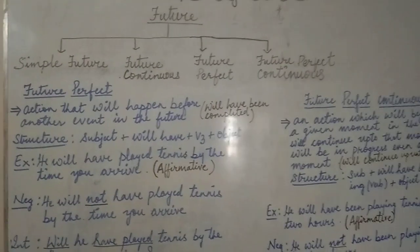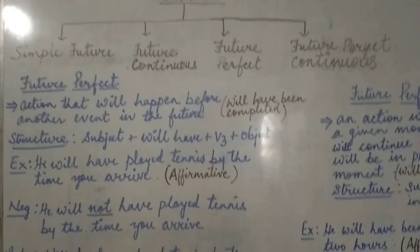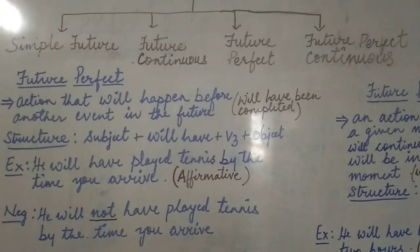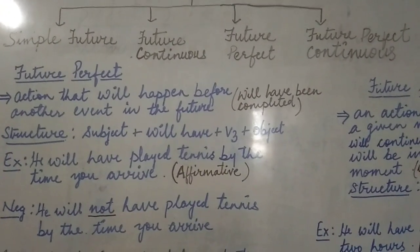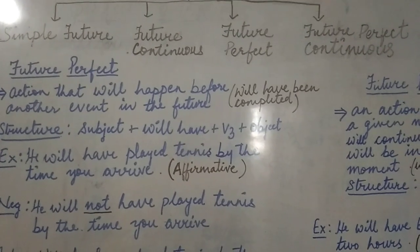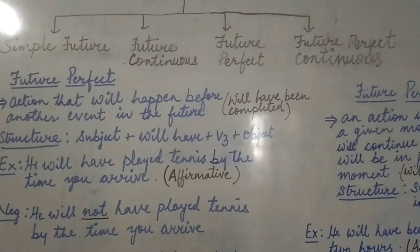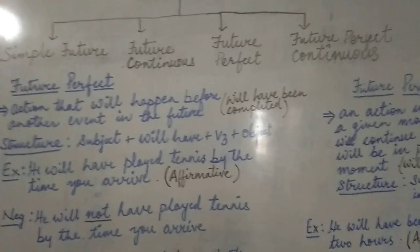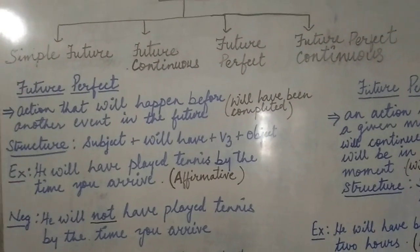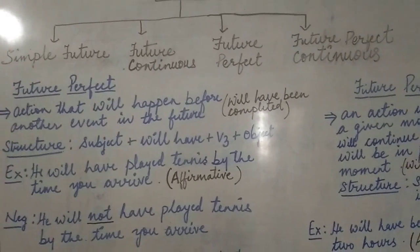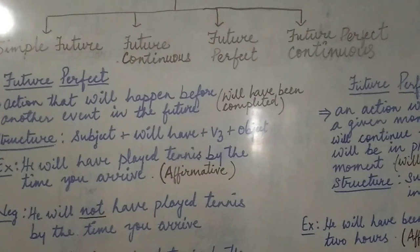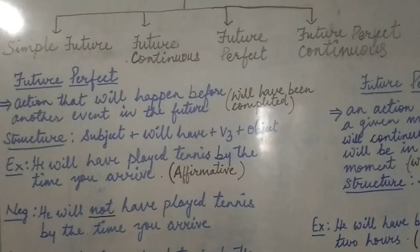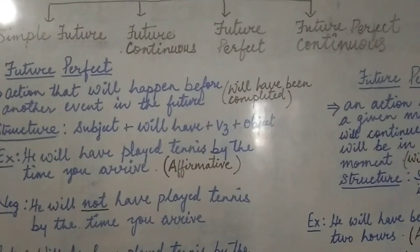What is future perfect? Future perfect tense expresses an action that will happen before another event in the future. It is talking about the future that has not yet taken place, specifically about the moment when your action will be completed.